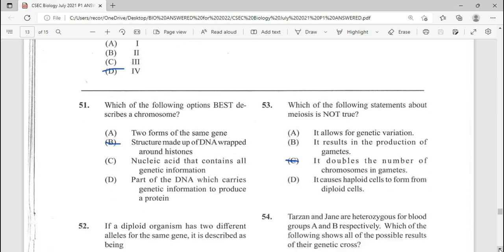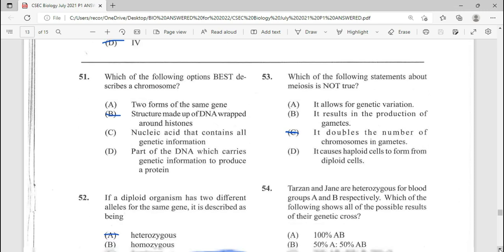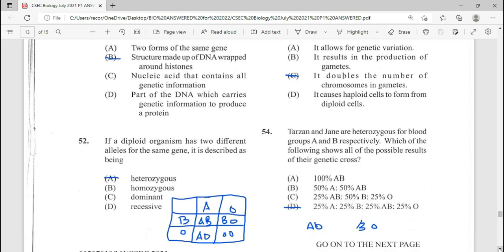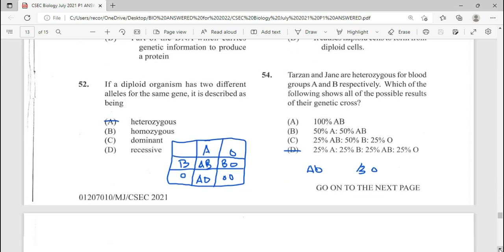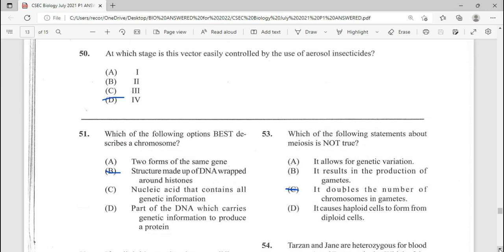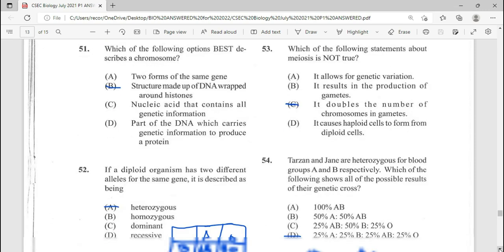51, which of the following option describes a chromosome. This is a repeated question. B, structure made up of DNA wrapped around histones. 52, if a diploid organism has two different alleles for the same gene it is described as being heterozygous. Repeated question. And we are moving on to 53. Which of the following statement about meiosis is not true? Answer there being C, double the number of chromosomes in gametes. So remember not true.